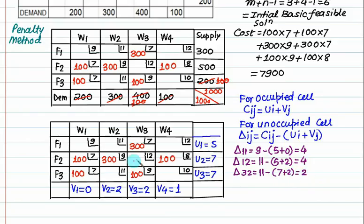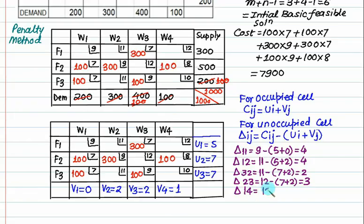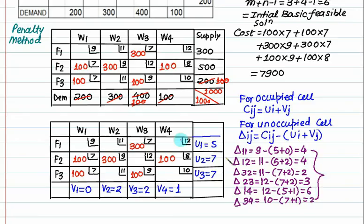For cell with cost 12, row value 7, column value 2: delta = 12 - 9 = 3. For cell with cost 14, row value 5, column value 1: delta = 14 - 6 = 8. For cell with cost 10, corresponding values give delta = 2. All delta values are positive, so this is the optimal solution.